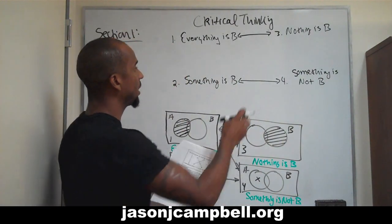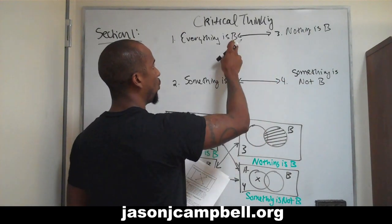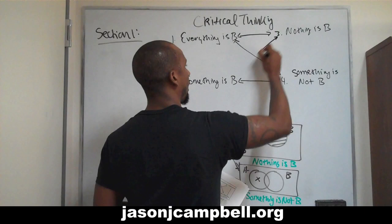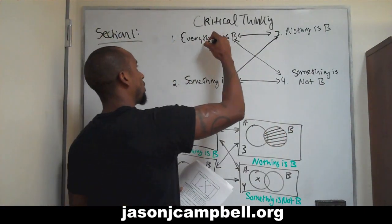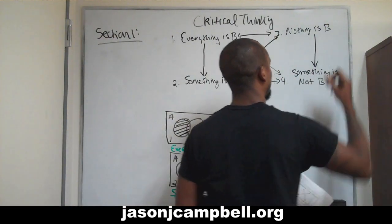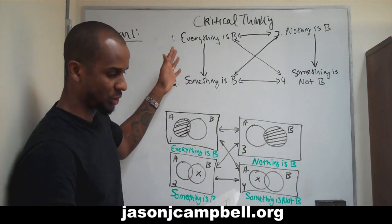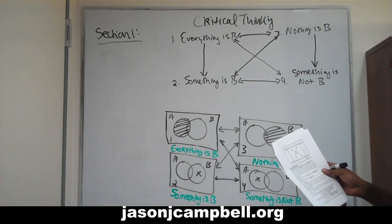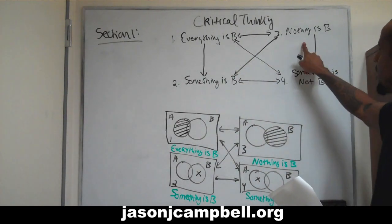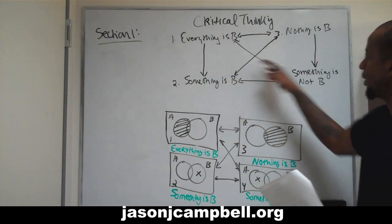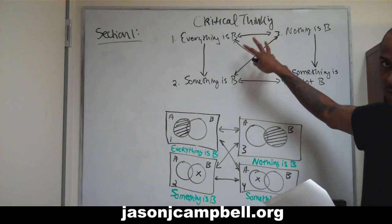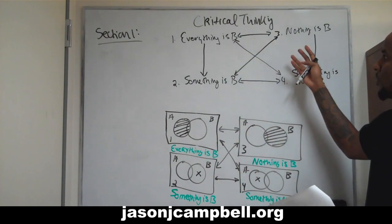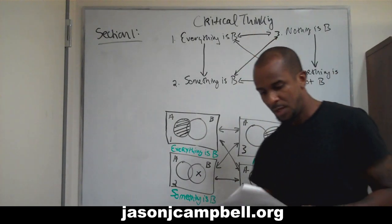We want to connect four and one — or one and four, conversely — with an arrow, and connect two and three. Unlike the first example, we also want to draw two arrows that go straight down. Your image should now show: Everything is B, Nothing is B, Something is B, Something is not B, with all the different connectors. Because we understand the structure of these events, we're able to get rid of the images and just keep the concepts. Now we're going to look at the relationship between the concepts.